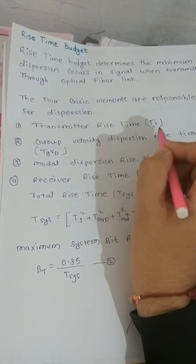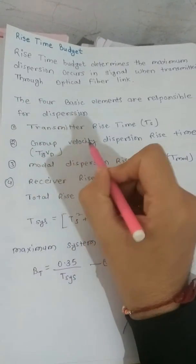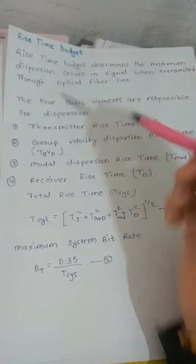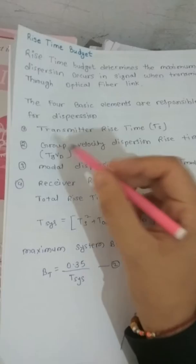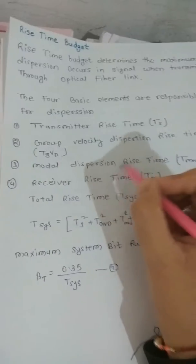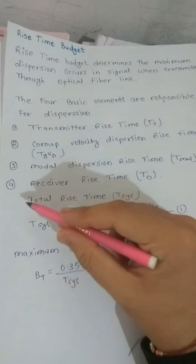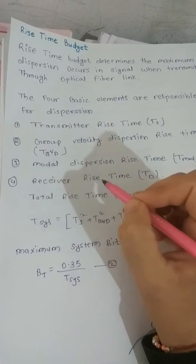Group velocity dispersion rise time T_GVD, third modal dispersion rise time T_mod, fourth receiver rise time T_D.